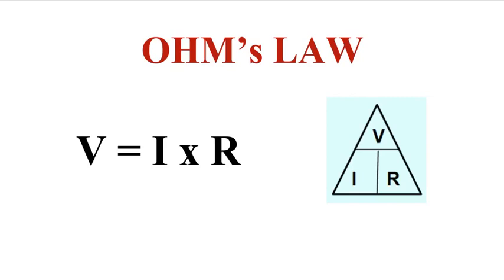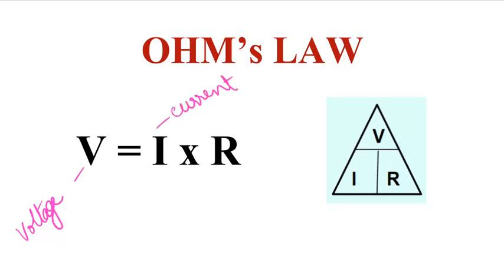Today I will show you how to use Ohm's Law to calculate voltage, current, and resistance. The formula is V equals I times R. V here is voltage, I here is current, and R here is resistance.